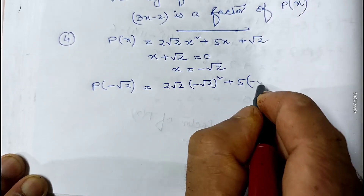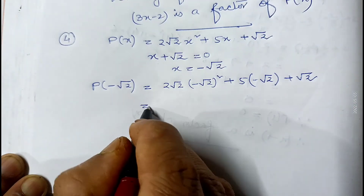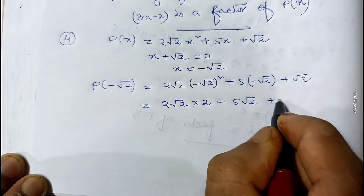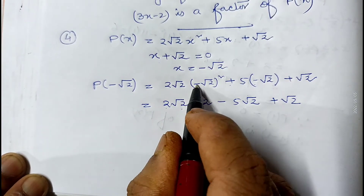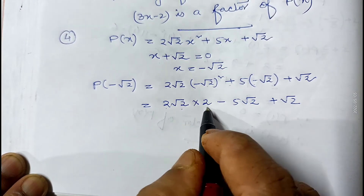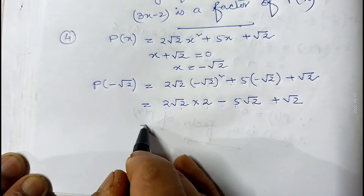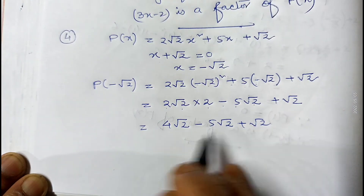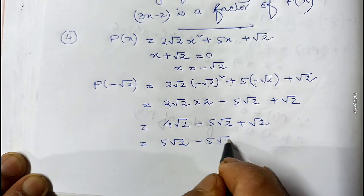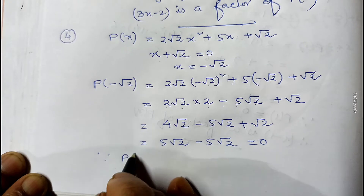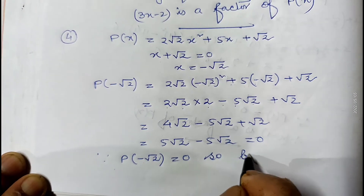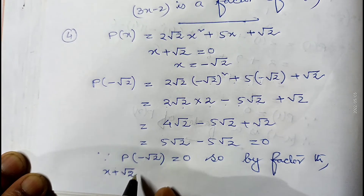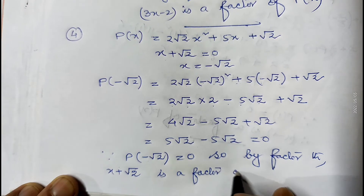Since the power is even, (minus root 2) squared is plus 2. So we get 2 root 2 times 2 minus 5 root 2 plus root 2, which gives 4 root 2 minus 5 root 2 plus root 2. Now 4 root 2 plus root 2 is 5 root 2, so 5 root 2 minus 5 root 2 equals 0. Since p(minus root 2) equals 0, by the factor theorem x plus root 2 is a factor of the given polynomial p(x).